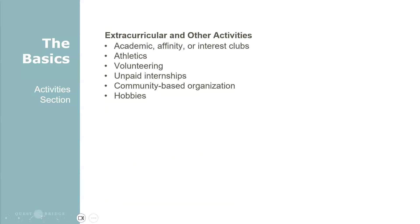Then we have the extracurricular and other activities section. This is where you would include any academic affinity or interest clubs, athletics, volunteering, community engagement, unpaid internships, community-based organizations like a college access program, and hobbies that take up a significant amount of your time. Hobbies can definitely make their way into the activity section, especially if they are time-consuming, involve individual competition, relate to your future career, or represent a small business in progress. Carefully think about how your hobbies fit in with your other activities and what they show about you.